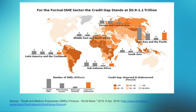As we can see in this table, nowadays small and medium enterprises play a major role in most economies, particularly in developing countries. Formal SMEs contribute up to 45% of total employment and up to 33% of the national income or GDP in emerging economies.